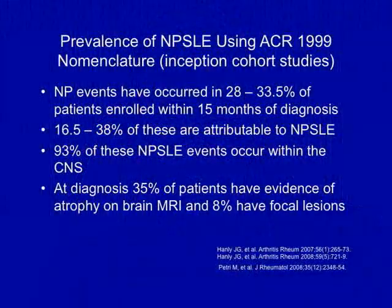To date, there are two prospective cohorts studying neuropsychiatric syndromes: the SLIC cohort and the Brain Connection cohort from Maryland. What we know now is that neuropsychiatric events have occurred in 28–33% of patients within 15 months of diagnosis, but of that 28–33%, only 17–38% are attributable to lupus. And 93% of these events occur within the central nervous system rather than the peripheral nervous system.